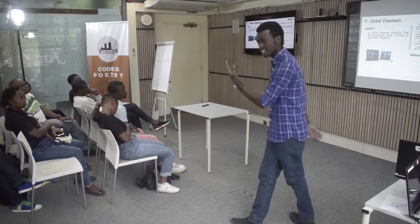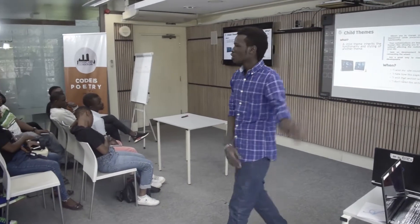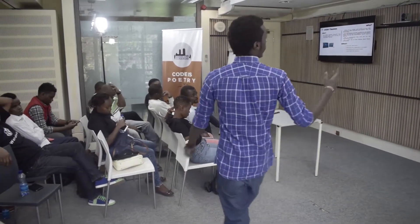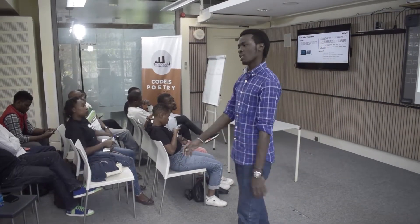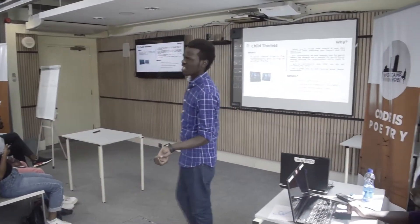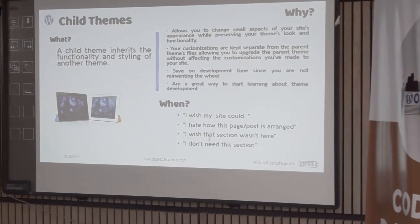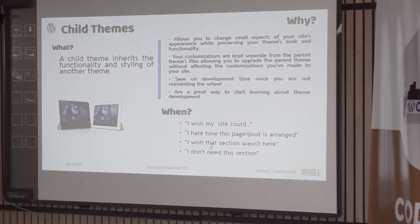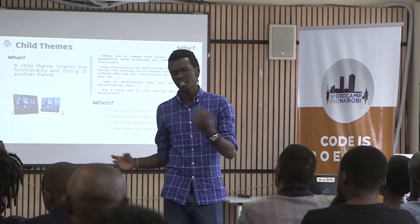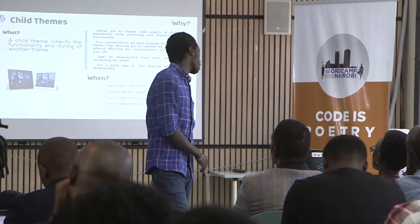So when do you need a child theme? The moment you start asking yourself questions like: I wish my site could look like this — the logo should be on the right not on the left, the widget should be on the right not on the left, or just one column. Or I don't like where the comment section is, or where the subscription button is. Or if you get a template and it has a widget you don't need, or you need a website without any commenting — just create a child theme, edit the code, and remove the commenting section.